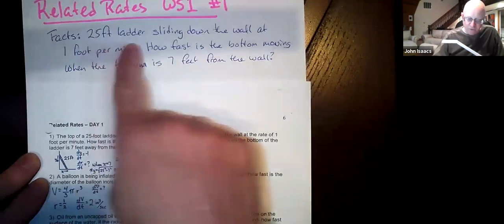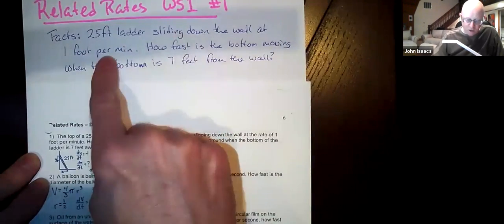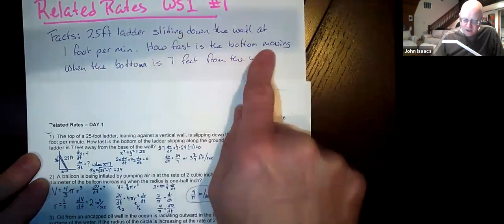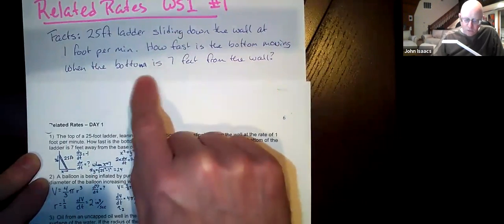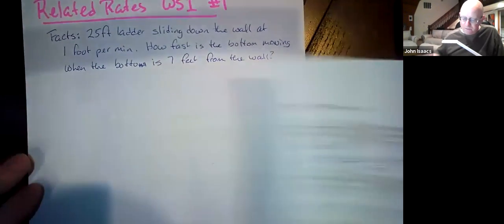Okay, so the facts are we have a 25-foot ladder. It's sliding down the wall at one foot per minute. The question is how fast is the bottom moving when the bottom is seven feet from the wall.